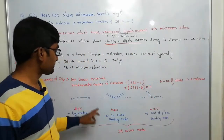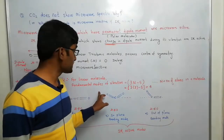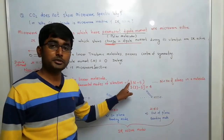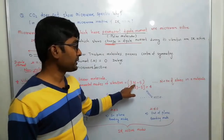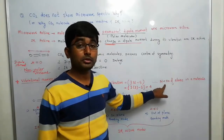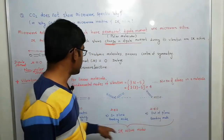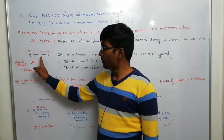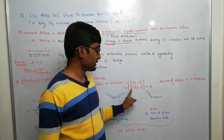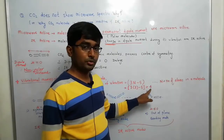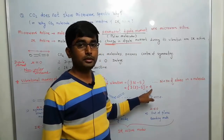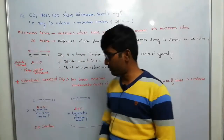For linear molecules, the fundamental modes of vibration are given by the formula 3N minus 5, where N stands for the total number of atoms in the molecule. In CO2 we have three atoms — one carbon and two oxygen — so N equals 3. Therefore, 3 times 3 is 9, minus 5 equals 4. The CO2 molecule has four fundamental vibrations.